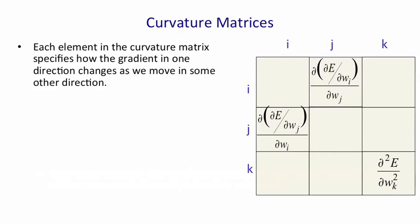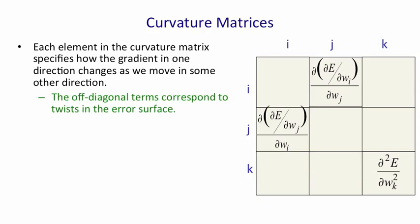Curvature matrices look like this. For each weight WI or WJ, they tell you how the gradient in one direction changes as you change in another direction. In other words, as I change weight I, how does the gradient of the error with respect to weight J change? That's what a typical off-diagonal term tells you. The terms on the diagonal tell you how the gradient of the error changes in the direction of a weight as you change that weight.